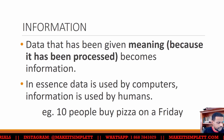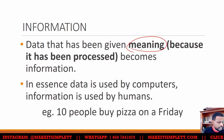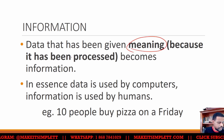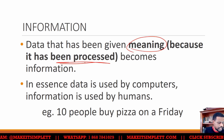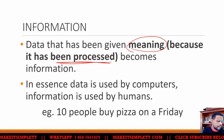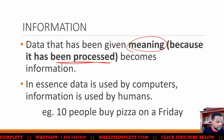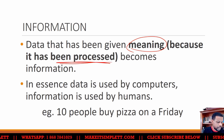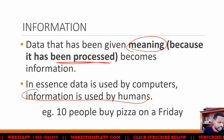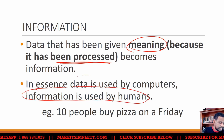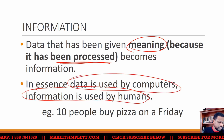Data has been given meaning when you turn it into information. So information is data that has been processed. In essence, data is used by computers and information is used by humans. Usually information is what humans like; data is what computers like.